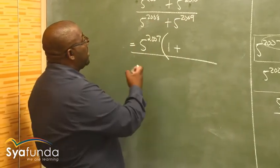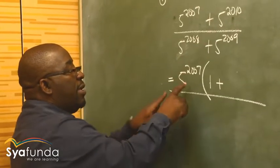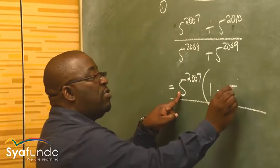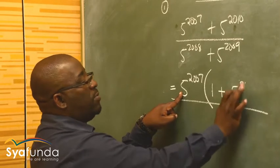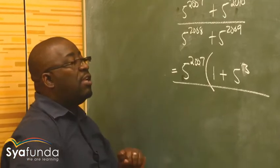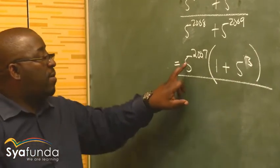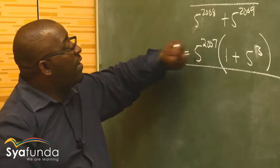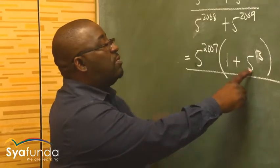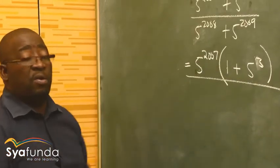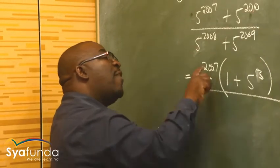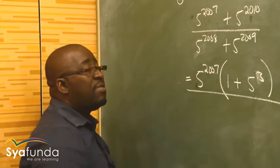Now what are we doing in this particular case? We want to get 2007 times what will give us 2010? It will be times 5 to the power 3, because 3 plus 2007 gives us 2010. So this is what we have in our numerator. 5 to the power 2007 is a common factor. When I take it out, I'm left with 1. 5 to the power 2007 times 5 to the power 3 gives us that. When we're multiplying, you add the exponents. Let's do the same thing on the denominator.